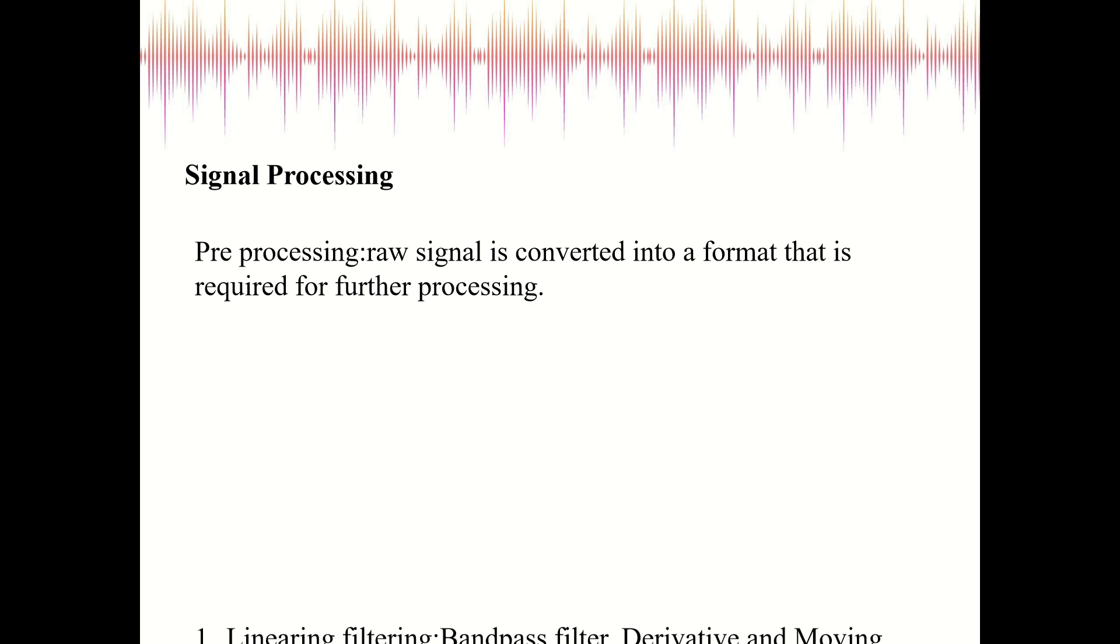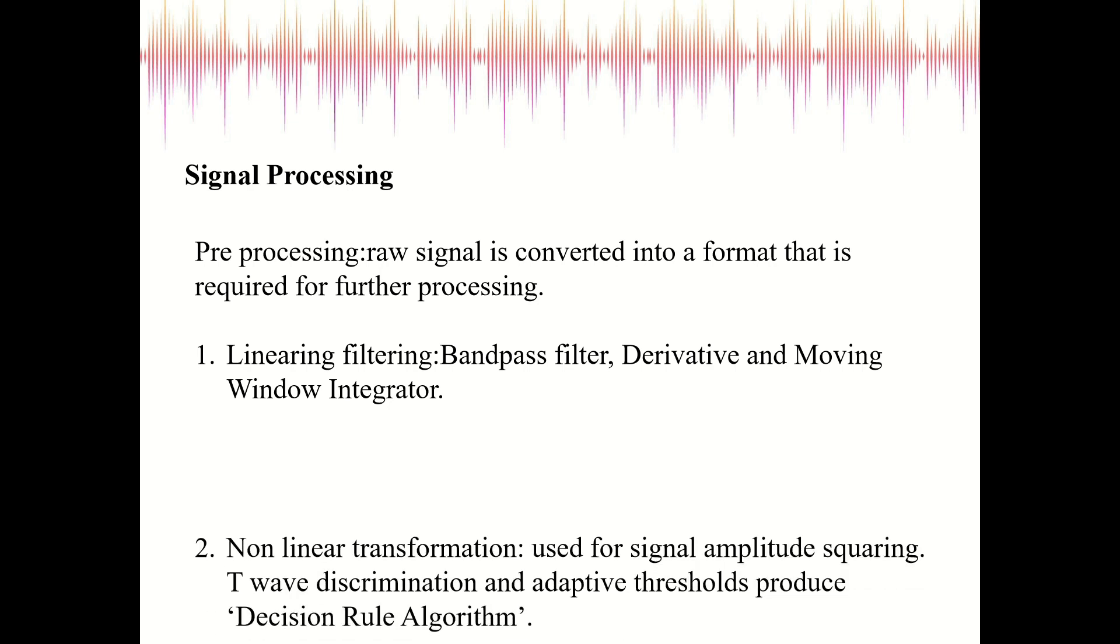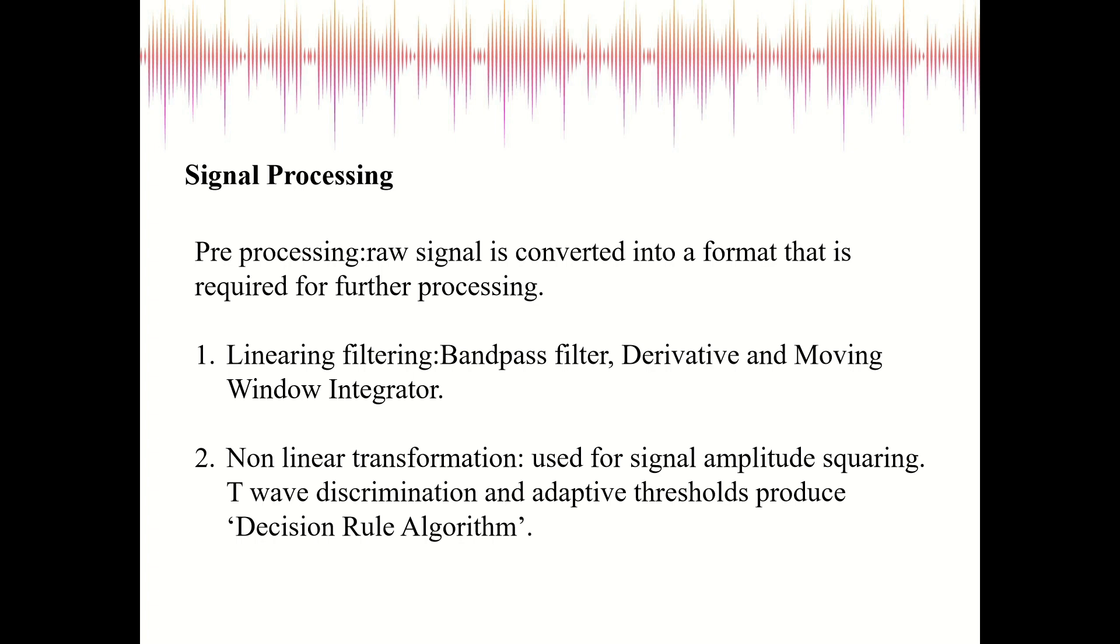Now we have signal processing. Under that we have pre-processing. Pre-processing is nothing but the data preparation technique in which raw signal is converted into a format that is required for further processing. It is generalized into linear filtering, which comprises of bandpass filter, derivative, and moving window integrator. Then we have non-linear transformation. These are used for signal amplitude squaring, T-wave discrimination, and adaptive threshold or decision rule algorithms.